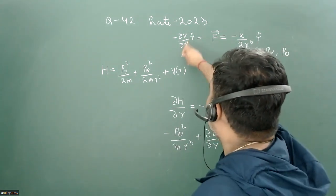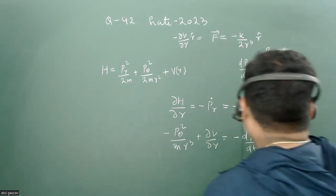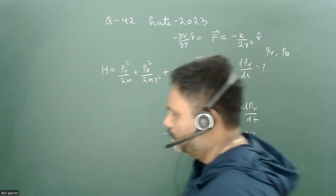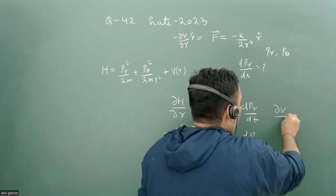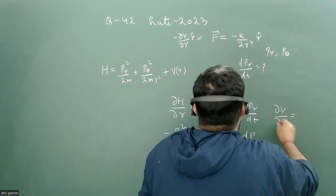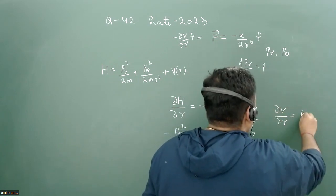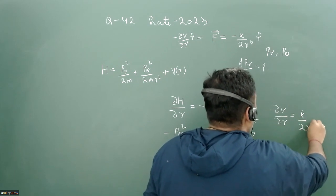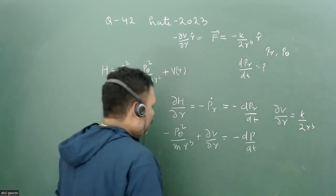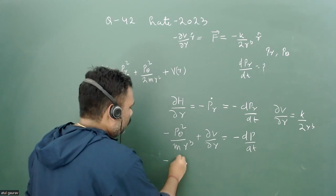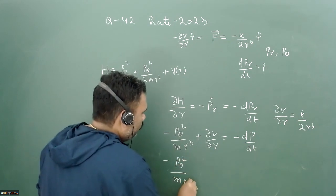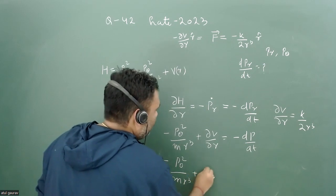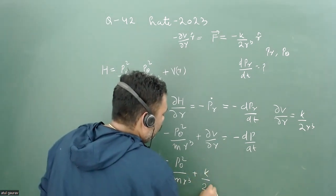We can directly write the value of del V/del r from here. We can easily find that the value of del V/del r equals k/2r³. So we can write this particular thing.